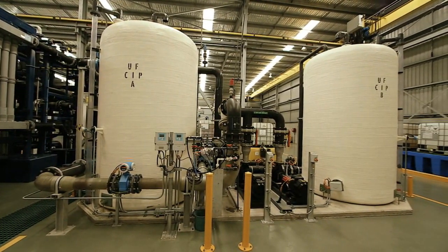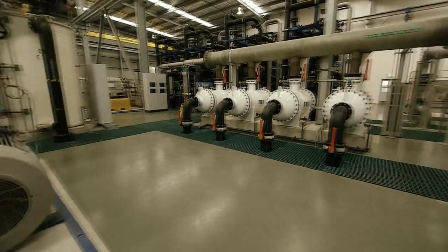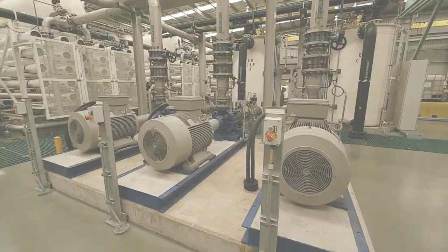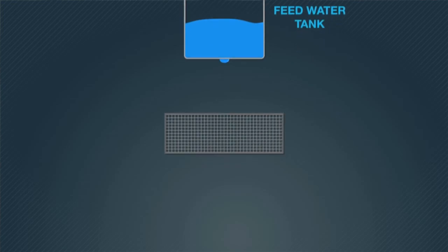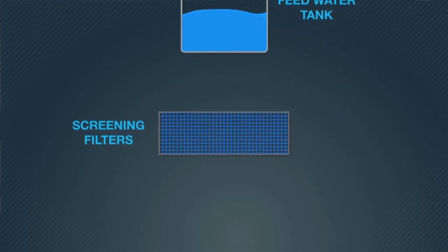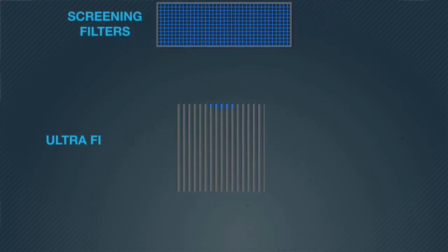Recycled water is produced using the treated wastewater from the Altona Treatment Plant. The wastewater goes through an intensive cleaning process at the treatment plant to become what we refer to as fit-for-purpose recycled water.